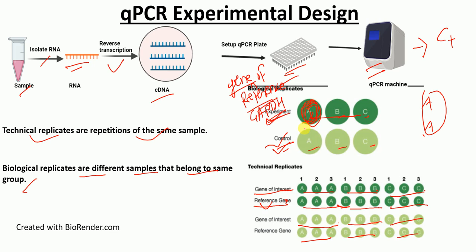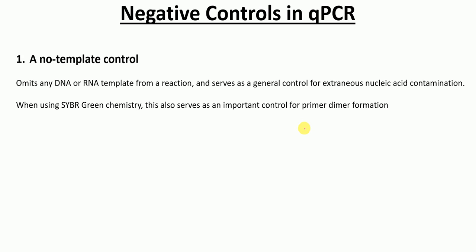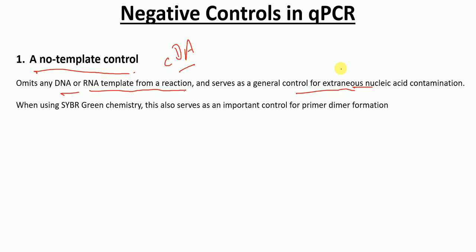In this part, I'm going to talk about the different kinds of controls used in QPCR experiments. One of the most commonly used controls is the No Template Control. In this control, you will not have any cDNA — it omits any DNA or RNA template from the reaction. This serves as a general control for extraneous nucleic acid contamination, and when using SYBR Green chemistry, it also serves as an important control for primer dimer formation.